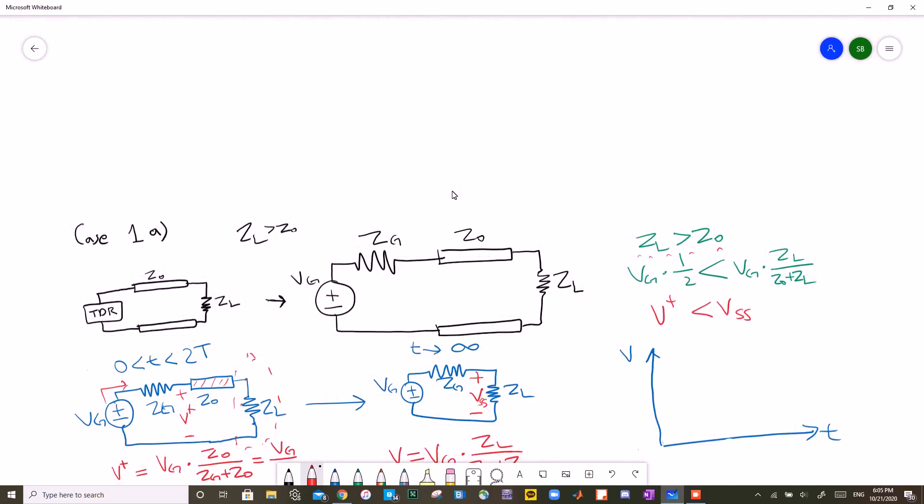So using what we know, let's solve case 1A. It is a TDR connected to a transmission line with a purely resistive load. They also tell us the initial condition that ZL is bigger than Z0. So now that we know that the circuit will reach steady state after 2T, we can divide the circuit into two situations. One where steady state has not been reached yet, which is on the left, and one where steady state has been reached, on the right.